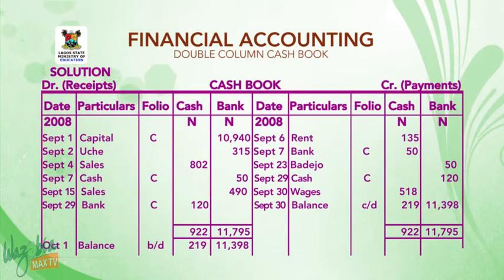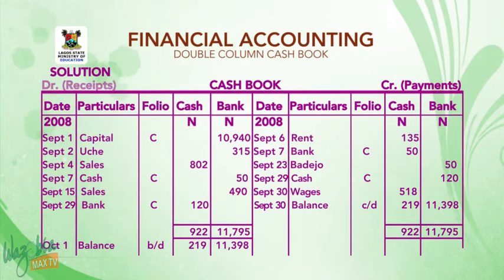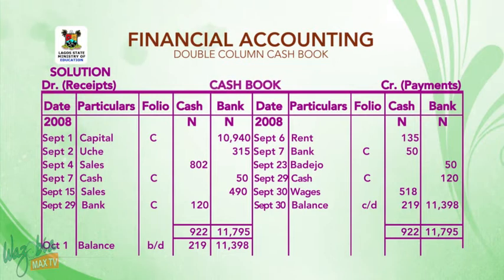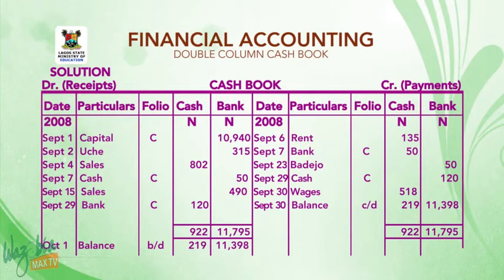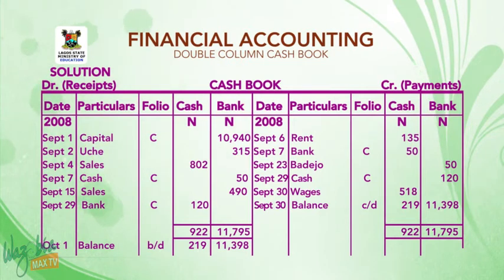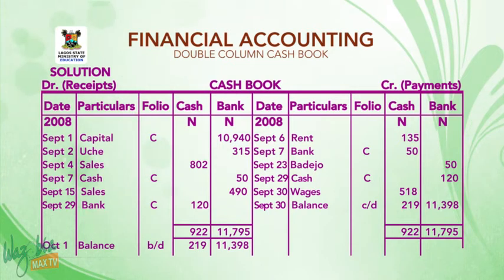For the solution, make the T-format and write 'cashbook' as the heading. Put DR on the left (debit) side and CR on the right (credit) side, with five columns on each side: date, particulars, folio, cash, and bank. Write 2008 under date and the Naira symbol under cash and bank on both sides. The first transaction — started business with cash at bank — means capital. Debit September 1, write 'capital' under particulars, and record 10,914 Naira under the bank column, since the money is in the bank.